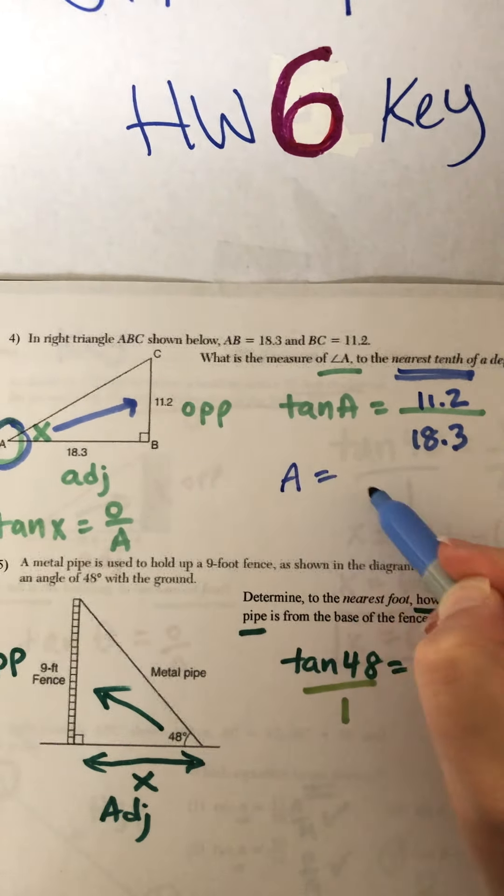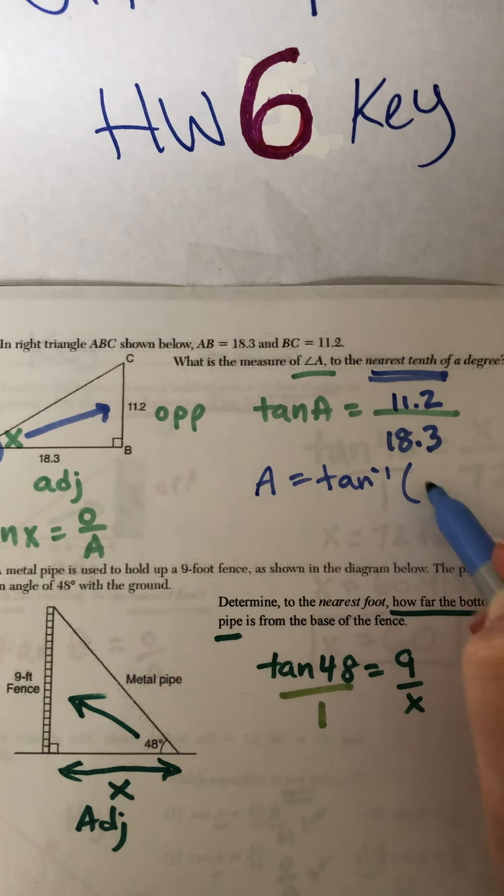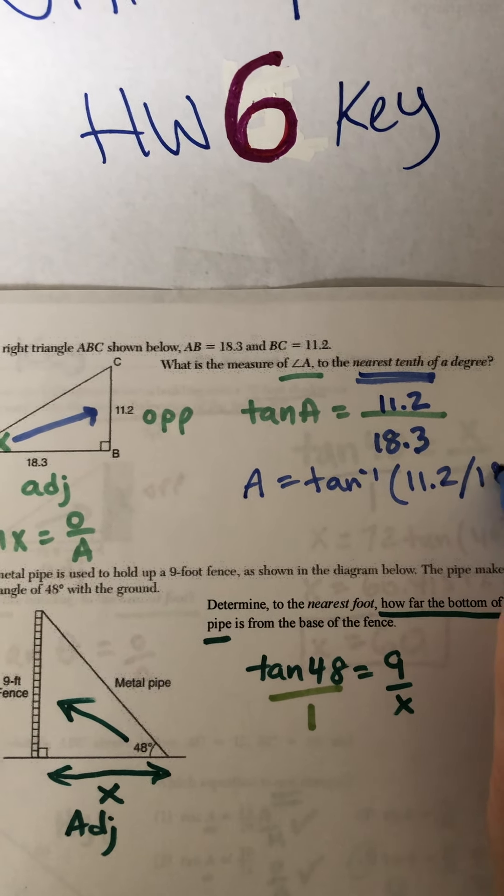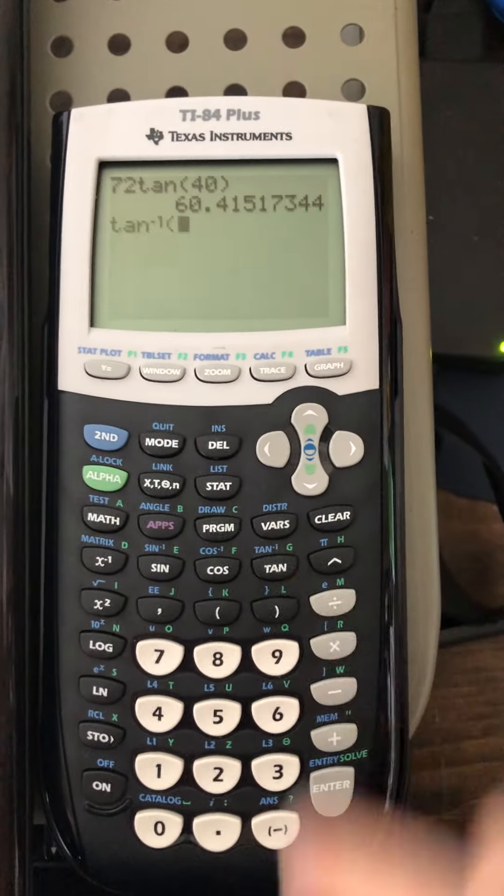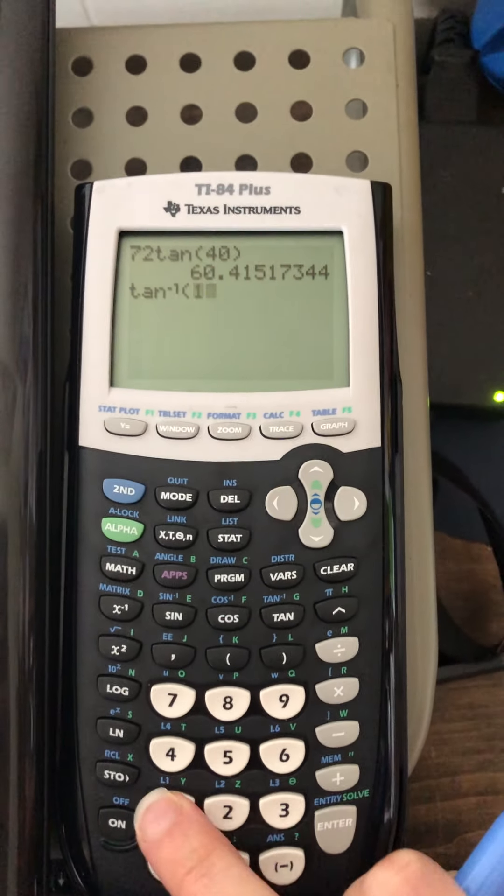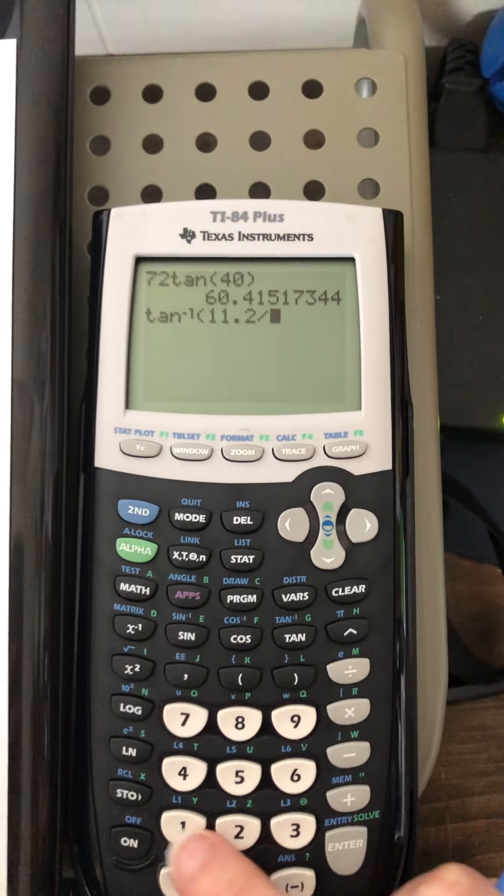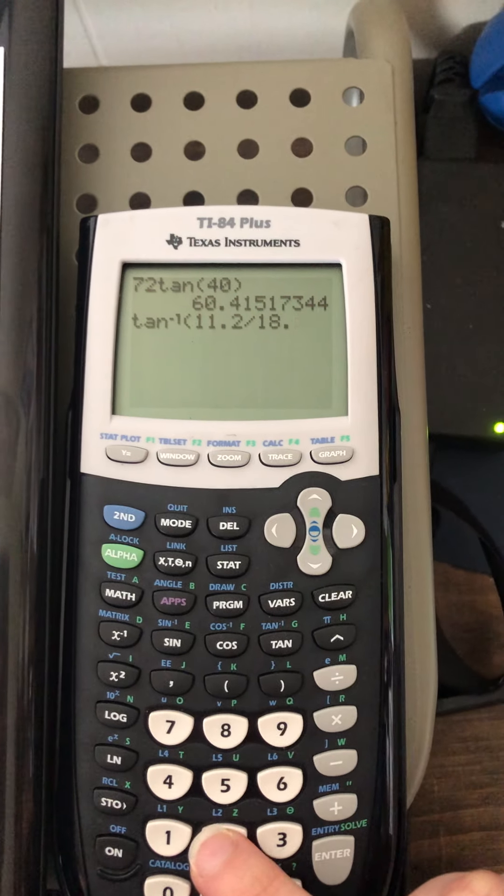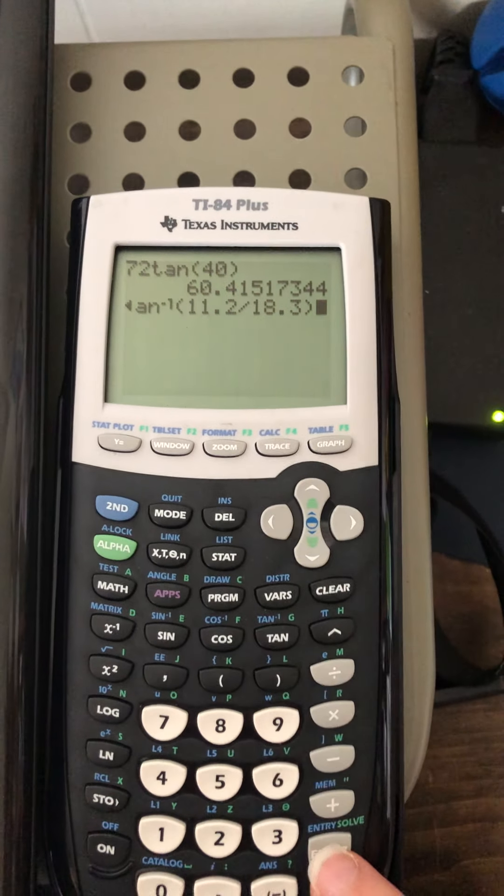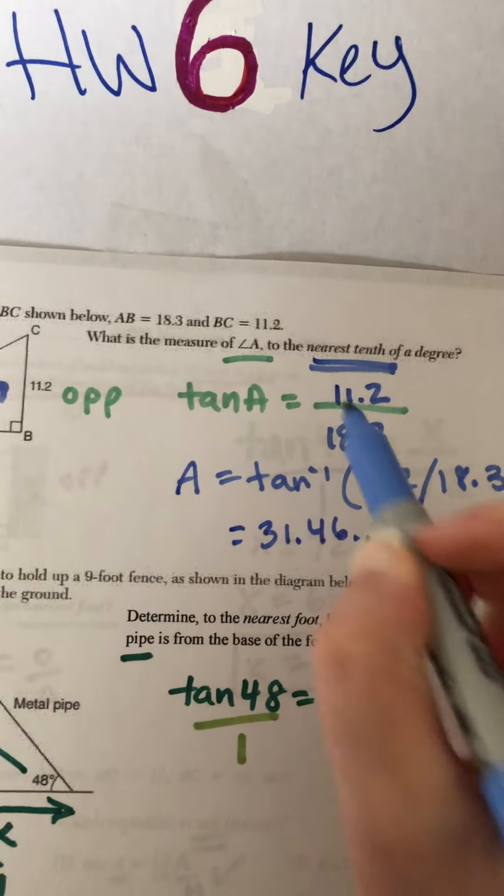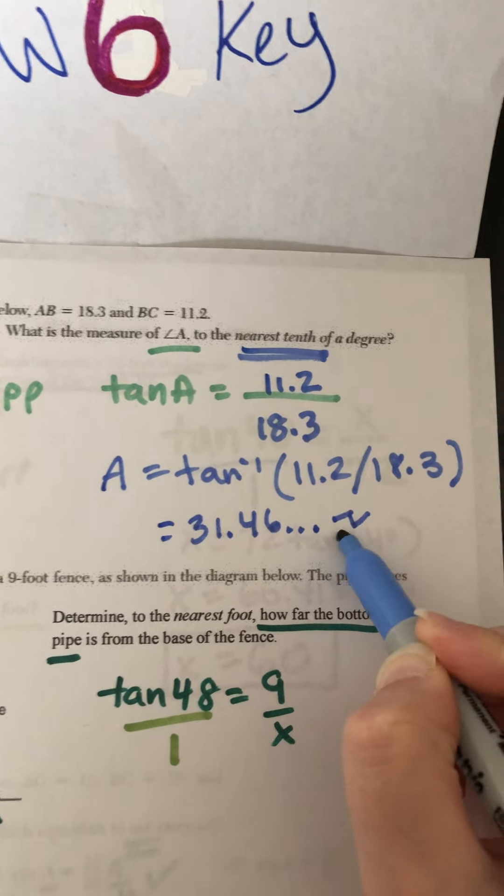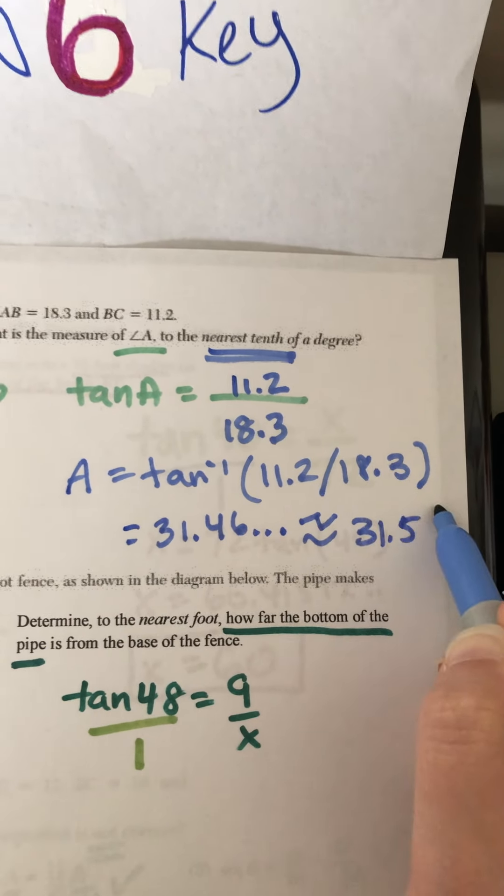Now, to get angle A all by itself, we need inverse tan, tan negative 1 of 11.2 divided by 18.3. Again, we need our calculator. Second, we'll get us the inverse tan. There you go. Tan negative 1. 11.2 divided by 18.3 get 31.46, dot dot dot, nearest tenth. It's about 31.5.